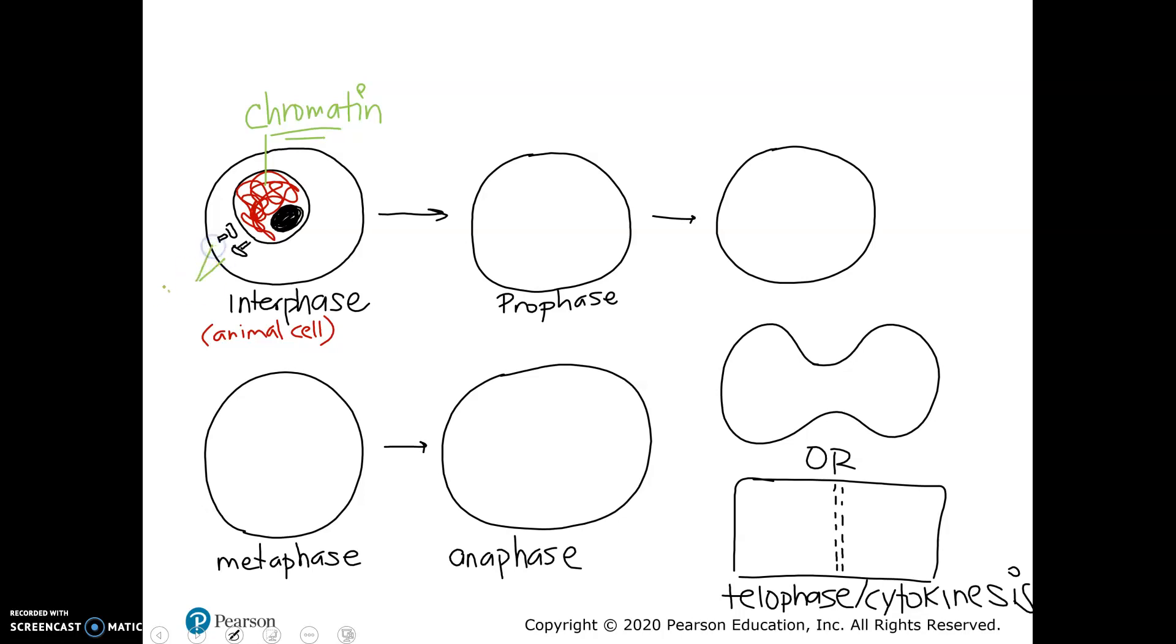These are called centrioles. When the cell divides, these are going to move to opposite sides. Plant cells do not have these. That's why I commented that this is an animal cell, because actually plant cells don't have centrioles.